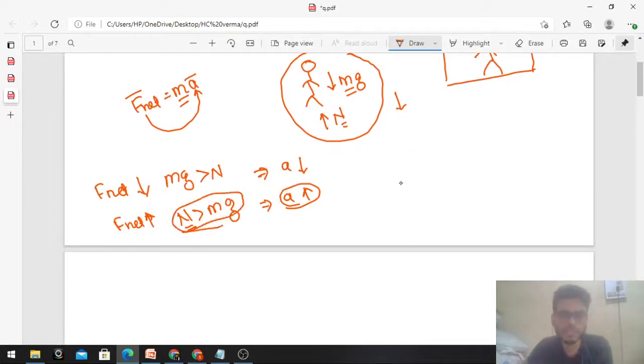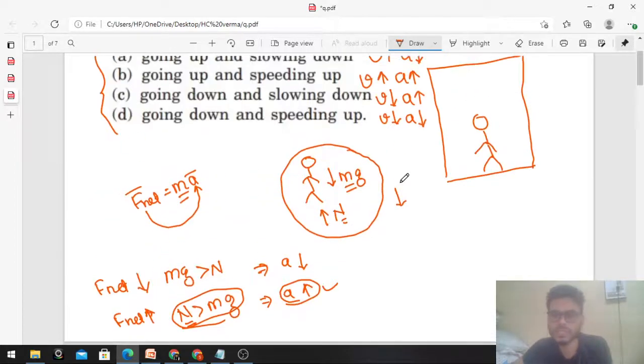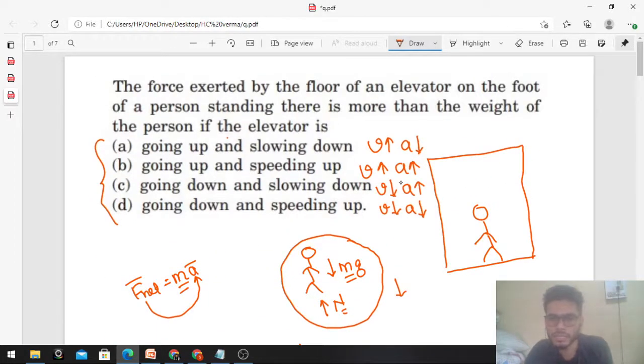Normal is greater than weight means acceleration should be upward. So you can check acceleration is upward. Now we have to talk here. I will talk about the first case. If acceleration is downward, this means weight is greater than normal.